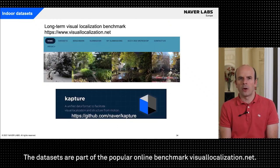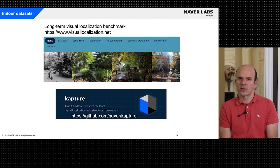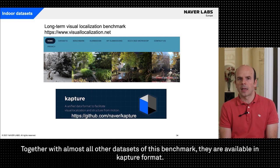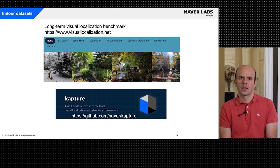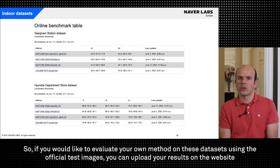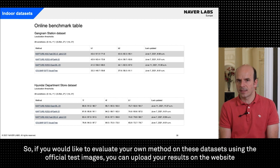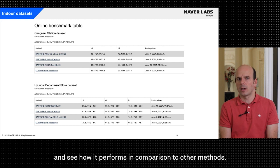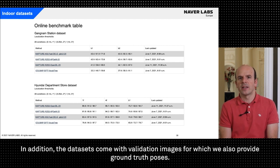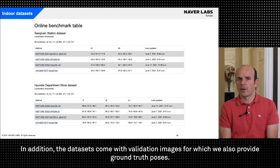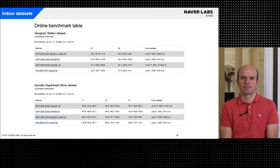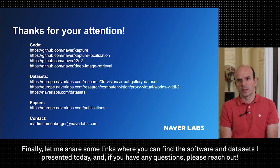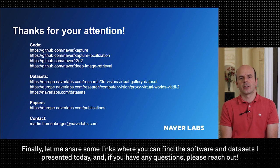The datasets are part of the popular online benchmark visuallocalization.net. Together with almost all other datasets of this benchmark they are available in Capture format. So if you would like to evaluate your own method on these datasets using the official test images you can upload your results on the website and see how it performs in comparison to other methods. In addition the datasets come with validation images for which we also provide ground truth poses. Finally let me share some links where you can find the software and datasets I presented today and if you have any questions please reach out.